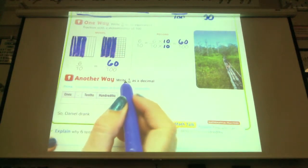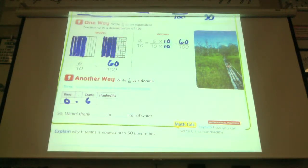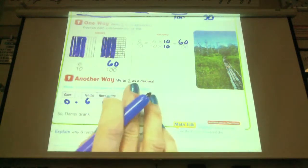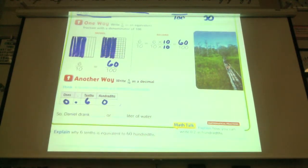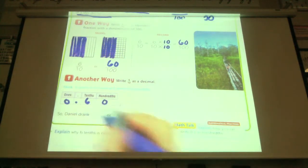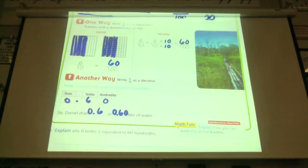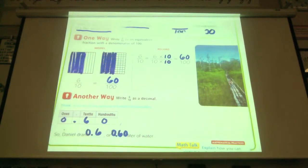"Another way we can do it is by using a place value chart. If we were going to write six-tenths, we know that here's the decimal point. And as I gave you a sneak peek the other day, we can put as many zeros as we want after this, and it's still the same number. So if I want to go to hundredths, there are no hundredths. I can just go ahead and put the zero, and then I can see that it's sixty-hundredths. So Daniel drank 0.6 or 0.60 liter of water."